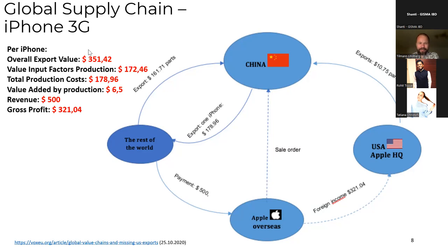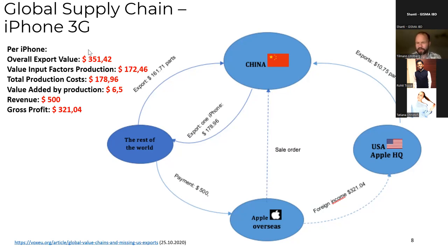This is quite an interesting perspective — you see a global value chain and how value is added through various manufacturing steps by companies connected through the production of one product. Apple basically makes most money off the iPhone. The overall cost of production is $178.96, and Apple's profit is $321.04. I would like to ask you: do you think this is justified — is it a fair share that Apple is getting per iPhone? Do you think it's too much, a fair share, or even too little?